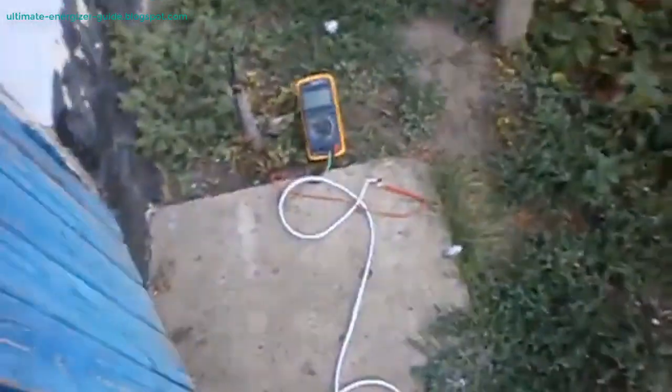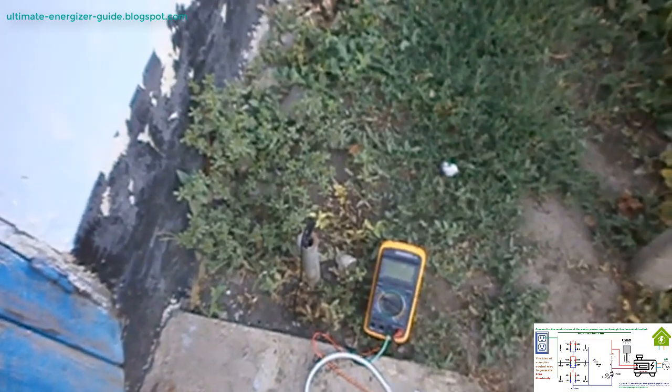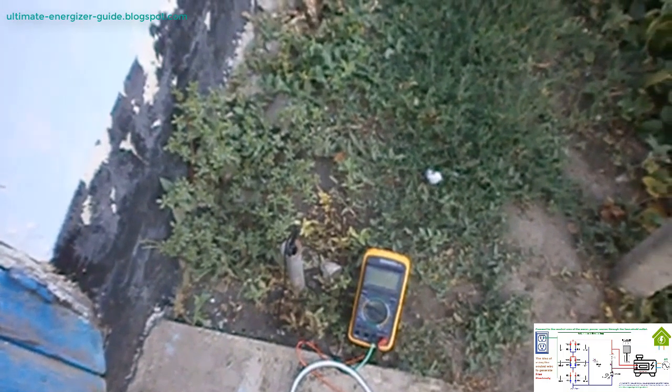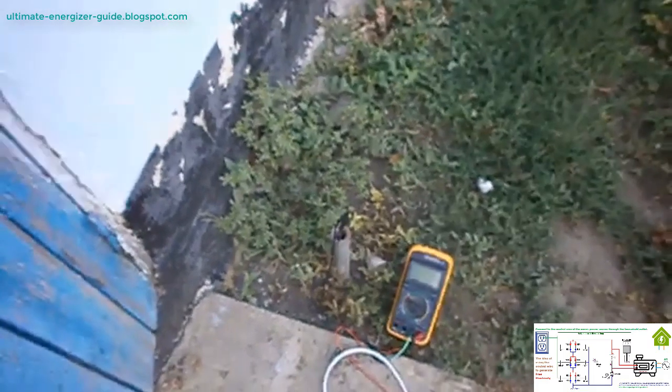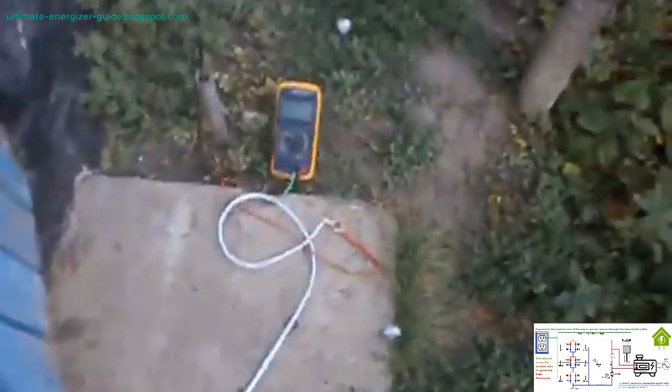Rediscovering lost technologies and the importance of historical truth: the development of free energy technologies is not just a technical challenge but also a historical one. Many of the principles underlying these devices were once well known but have since been forgotten or suppressed. The story of ether physics and free energy is a reminder of the dangers of allowing history to be written by the victors. As George Orwell pointed out in 1984, those who control the present control the past, and those who control the past control the future.